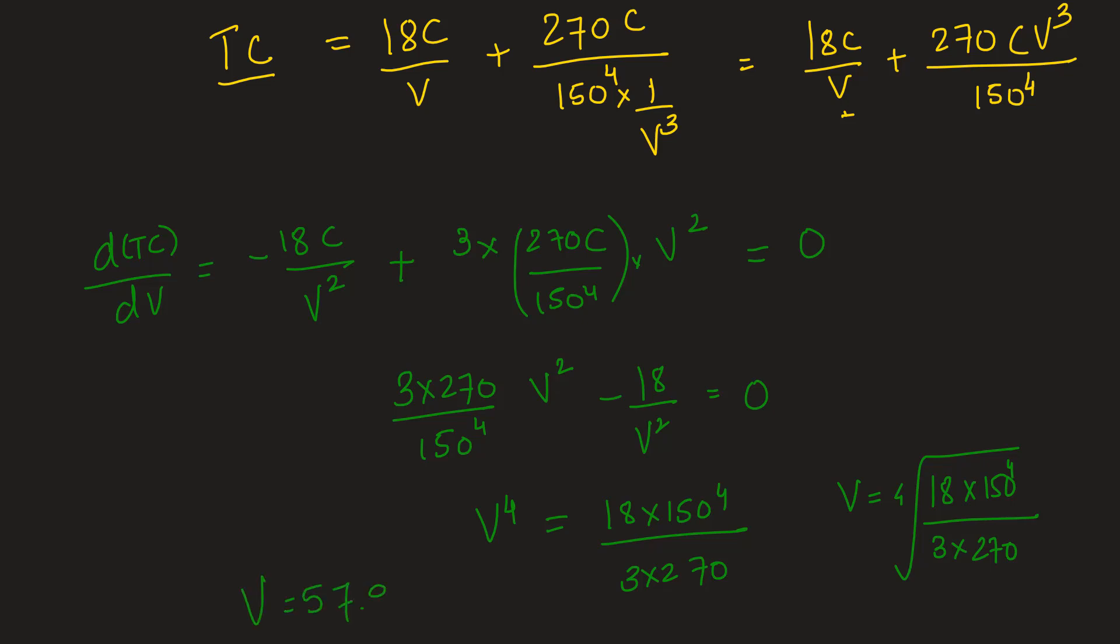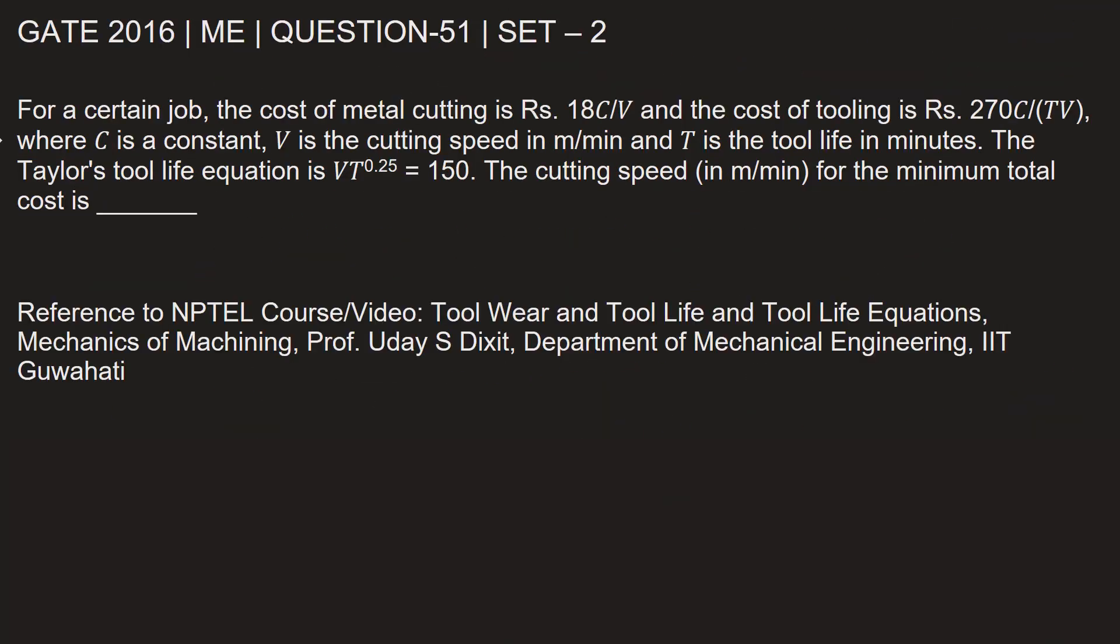Let's go back and fill in the answer. The cutting speed in meters per minute for the minimum total cost is 57.91. To learn more about tool life and tool life equations, you can refer to the NPTEL video 'Tool Wear and Tool Life and Tool Life Equations.' This video is from the course Mechanics of Machining.